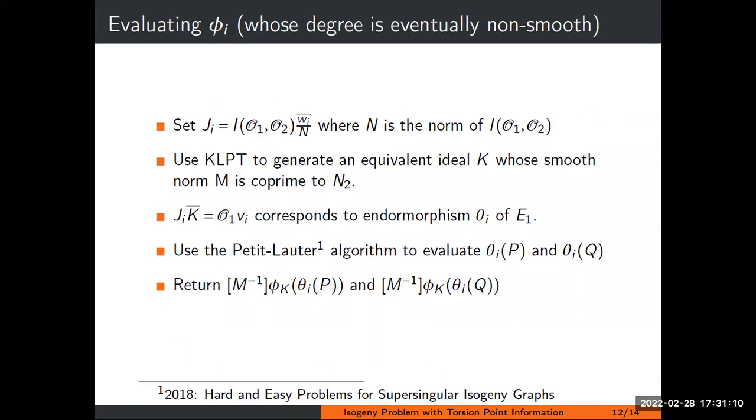First, how we evaluate non-smooth degree isogenies between two curves of known endomorphism ring. The key ingredient is an algorithm by Petit and Lauter, which deals with the special case where you have a curve of known endomorphism ring, and you want to evaluate an endomorphism that might not have smooth degree. The key idea is you can represent it as a linear combination of endomorphisms which are evaluatable. Then you evaluate those and use the linear combination to evaluate the non-smooth degree one. We'll be reducing to this.